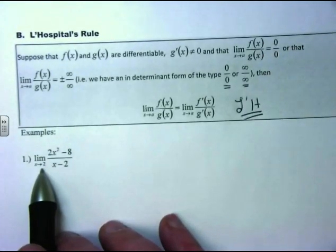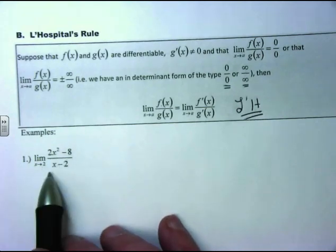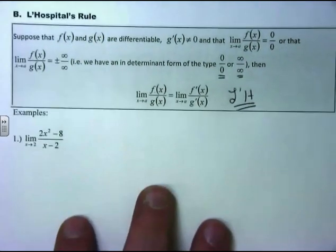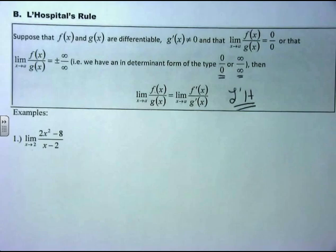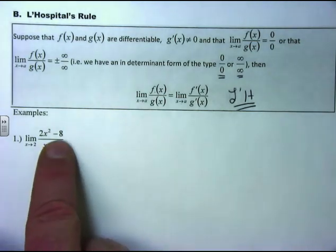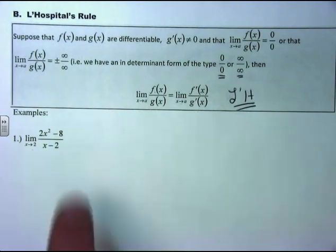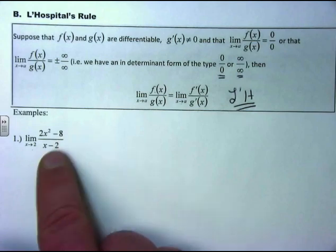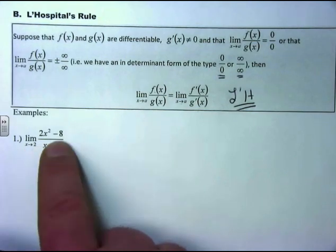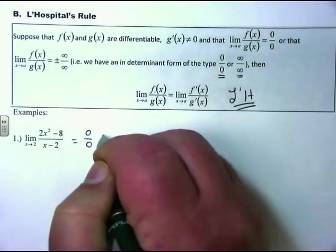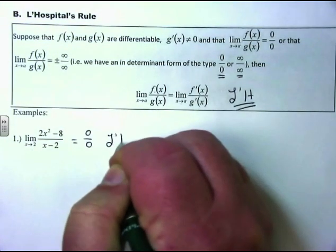Take the limit as x approaches 2 of (2x² − 8)/(x − 2). Plugging in 2: 2(4) − 8 = 0, and 2 − 2 = 0, so we get 0/0. In the old days from chapter 1, we'd factor out 2 to get 2(x² − 4) = 2(x+2)(x−2), then cancel (x−2), and plug in. But since we got 0/0, we're entitled to use L'Hôpital's rule.